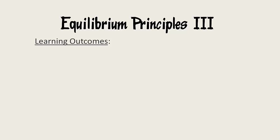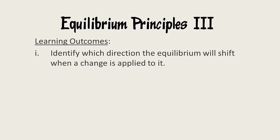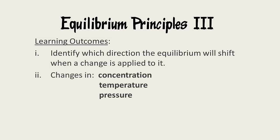One of the key learning outcomes in this video is to identify which direction the equilibrium reaction will shift when a change is applied to it. The three conditions which affect the equilibrium reaction are concentration, temperature and pressure. It is too big to cover all three in depth in one go, so we'll just focus on concentration in this video, and cover temperature and pressure in the final equilibrium video.